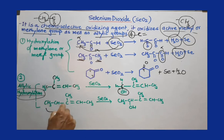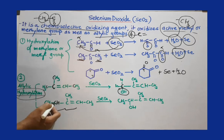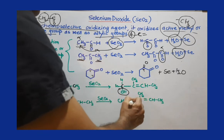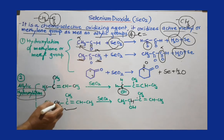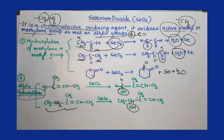In another example, you have to select the highly substituted end of the double bond. From that end, one hydrogen is removed and one OH group is introduced. In this way, you can perform allylic hydroxylation using selenium dioxide.